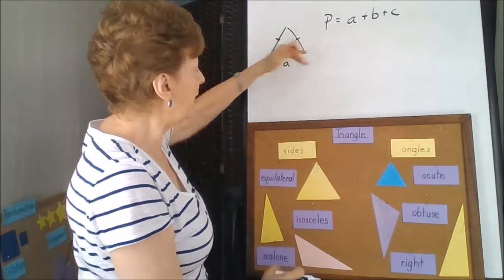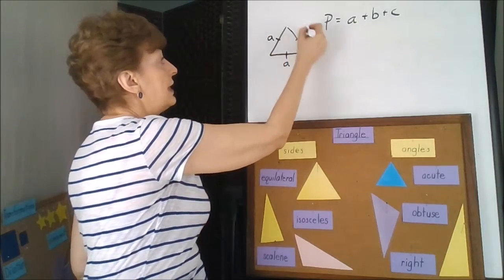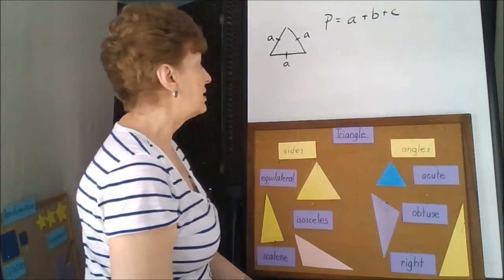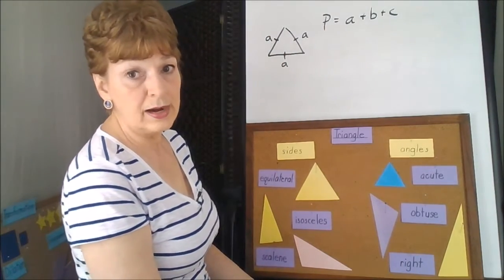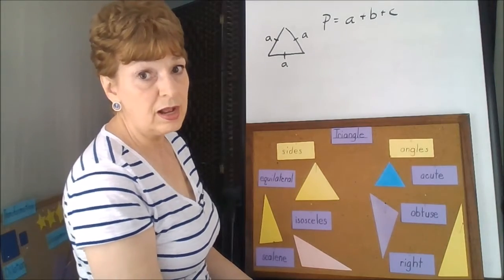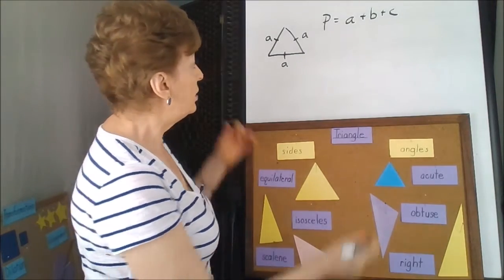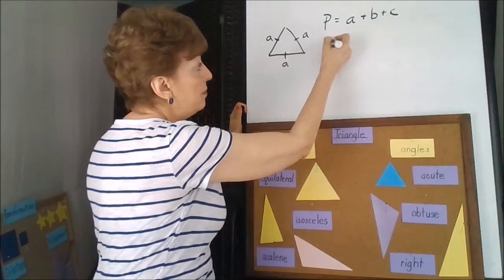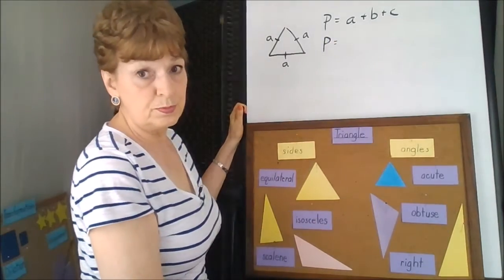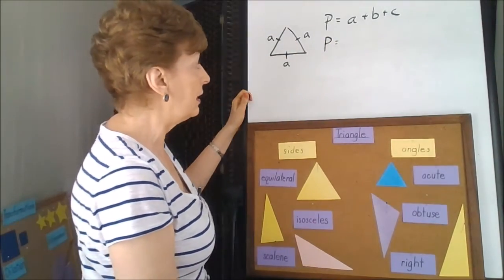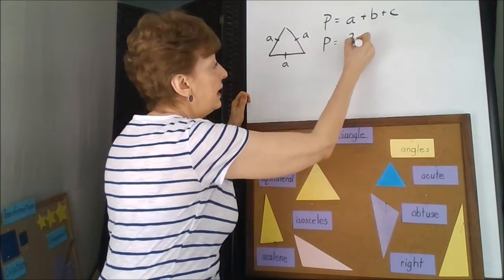we would use the same letter for each of these. That also signifies an angle or a side of a figure that is congruent. So we could be more sophisticated with the perimeter formula and say 3A.